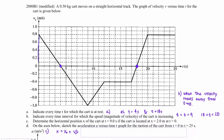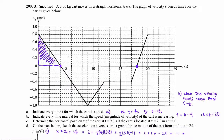The first segment is from 0 to 4 seconds. The displacement is the area of a triangle: one half times base times height, giving one half times 4 times 0.8. For the next segment, from t = 4 seconds to t = 9 seconds, the area is one half times 5 times negative 1. Adding these areas together and including the initial position of 2 meters, we get a total position of 1.1 meters.